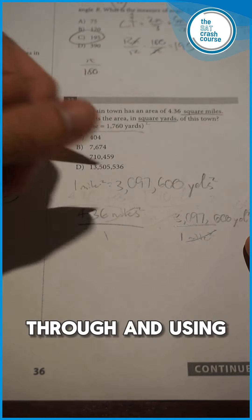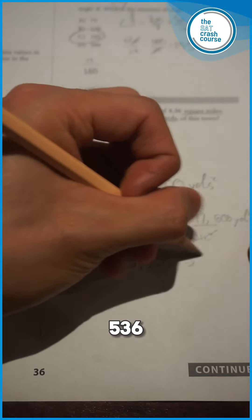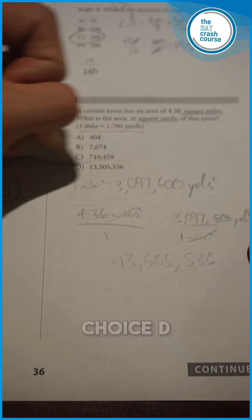We multiply this through and using your calculator, you should get 13,505,536, which is answer choice D.